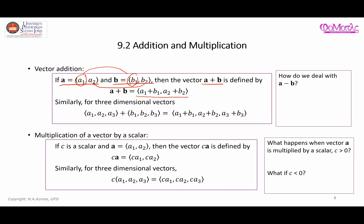Similarly, if you have three-dimensional vectors, the same idea follows. You add the components accordingly: the first component of vector A with the first component of vector B, the second component of A with the second of B, and the third component of A with the third component of B, as given by this formula.